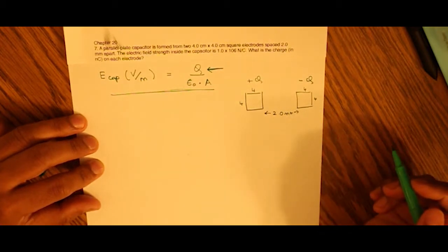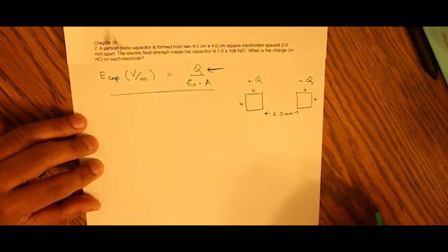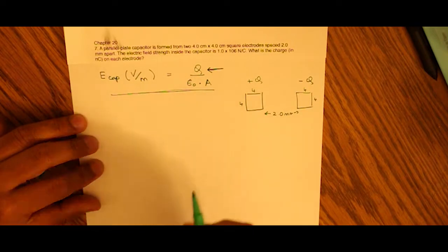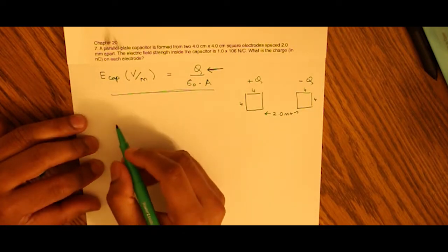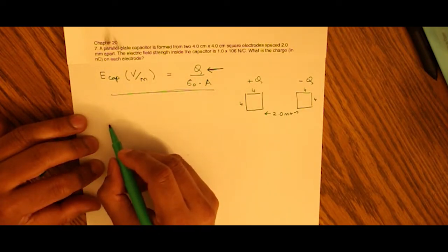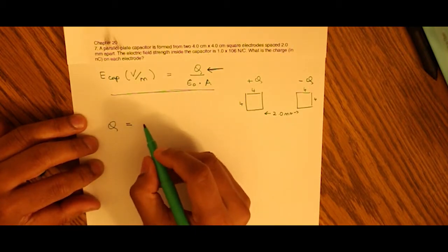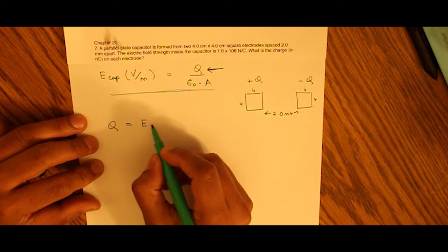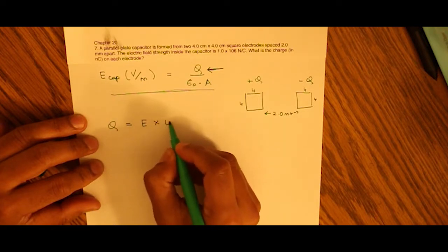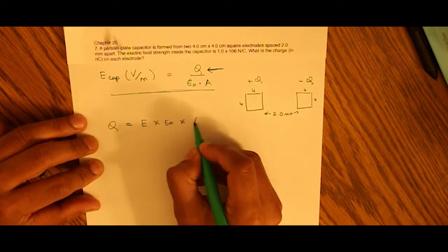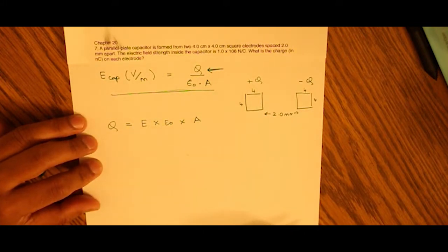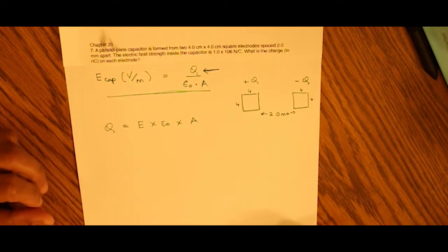Let's rearrange this formula so that we can find out what Q is. By cross multiplication, we can denote that Q equals electric field times ε₀ times area of each capacitor.